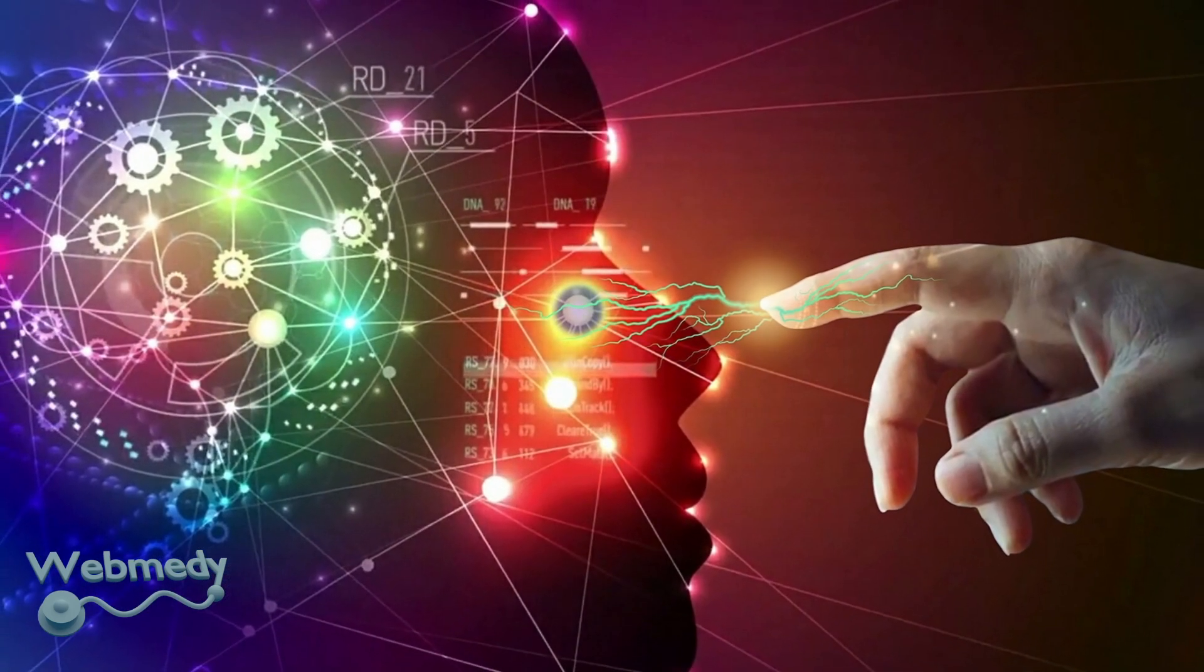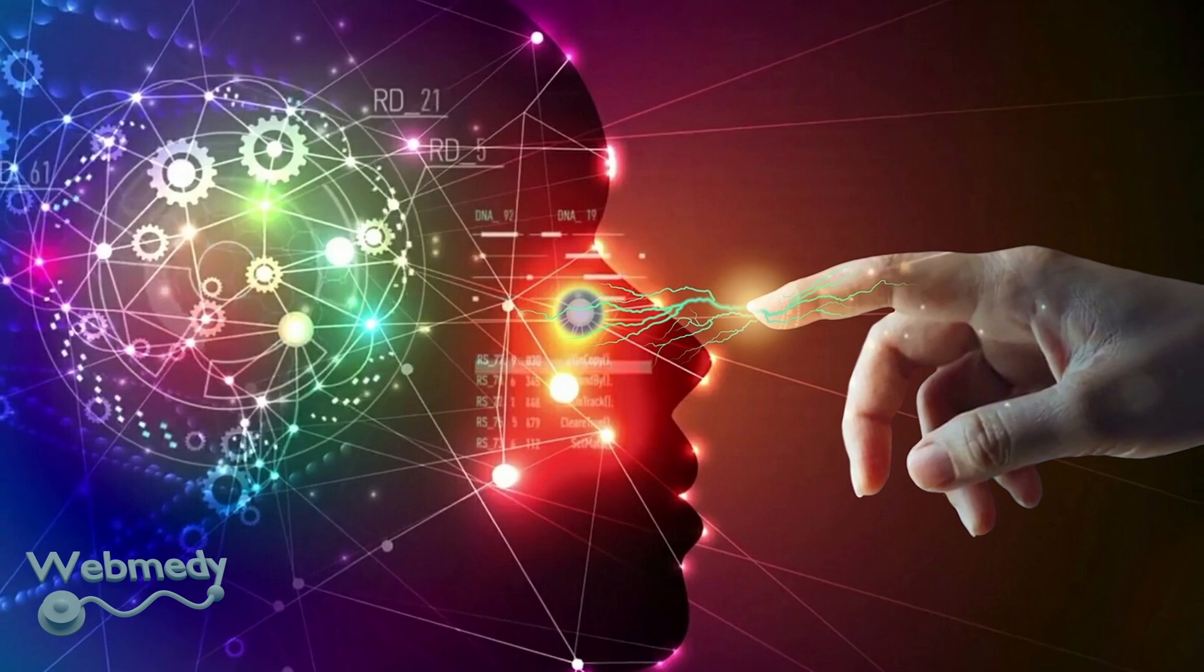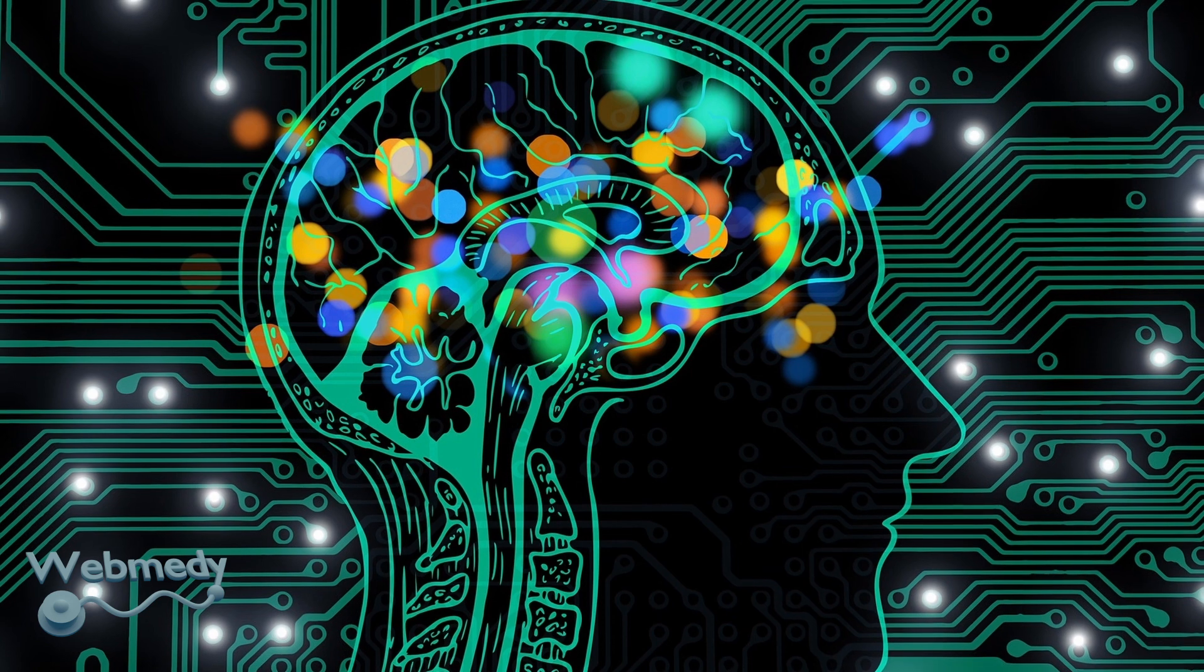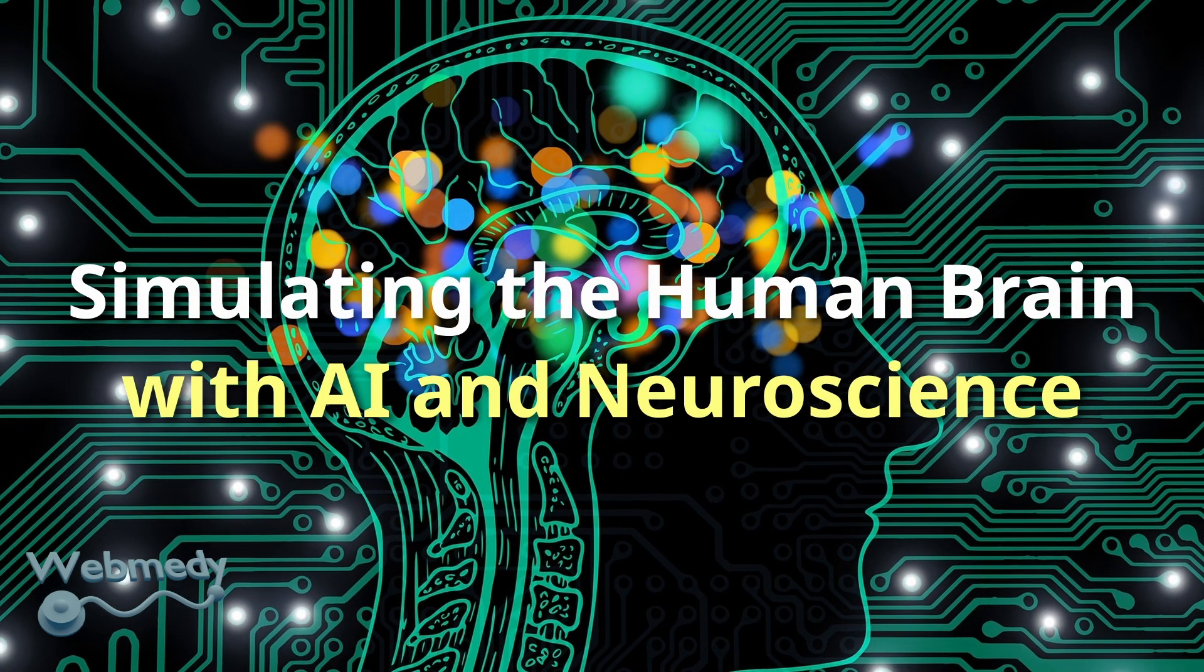The intersection of AI and neuroscience brings exciting possibilities as well as ethical challenges. In this video we will explore the progress made in this area and the challenges ahead. We will look at a possible future of using artificial intelligence to mimic the human brain.